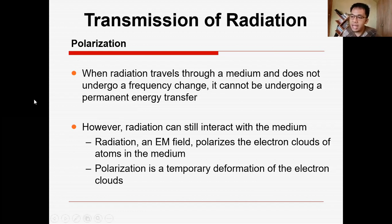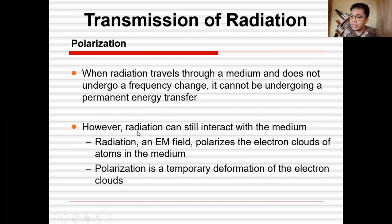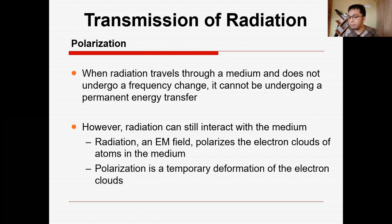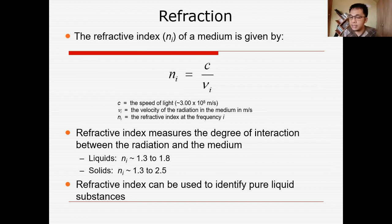When we say polarization, it occurs when radiation travels through a medium and does not undergo an energy permanent transfer — it passes straight through. However, when it interacts with the medium, there is a temporary deformation of the electron clouds, but the frequency does not change. The radiation passes through but can polarize the electron clouds of the atoms of the medium.